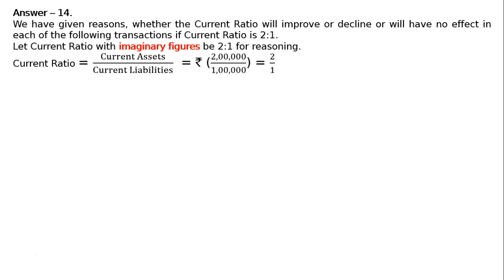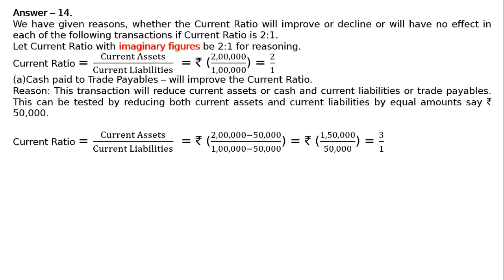Part A: Cash paid to trade payables. Paying cash to trade payables will improve the current ratio. This can be tested by reducing both current assets and current liabilities by equal amounts, say Rs. 50,000. Current ratio = (Rs. 2 lakh − Rs. 50,000) / (Rs. 1 lakh − Rs. 50,000) = Rs. 1,50,000 / Rs. 50,000 = 3:1. Hence, the ratio will improve, since paying current liabilities reduces both by the same amount, increasing the ratio.